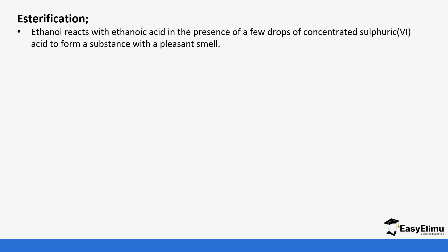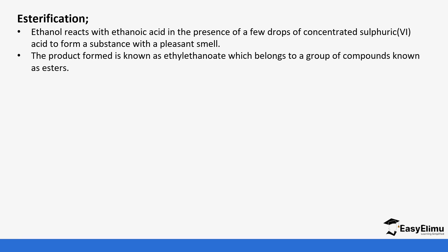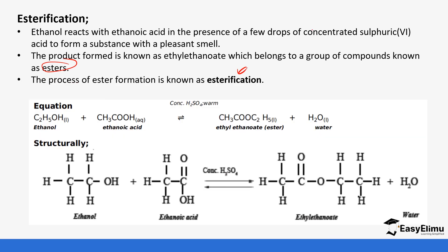The next property of alcohols is esterification, which you will also encounter again when we look at the properties of alkanoic acids. When you react alcohols with acids in the presence of a few drops of concentrated sulfuric acid, you form a substance with a pleasant smell. These substances are called esters and this process is referred to as esterification. For example, when ethanol reacts with ethanoic acid, an ester called ethyl ethanoate is formed plus water. The alkyl part of the ester comes from the alcohol and the alkanoate part comes from the alkanoic acid.